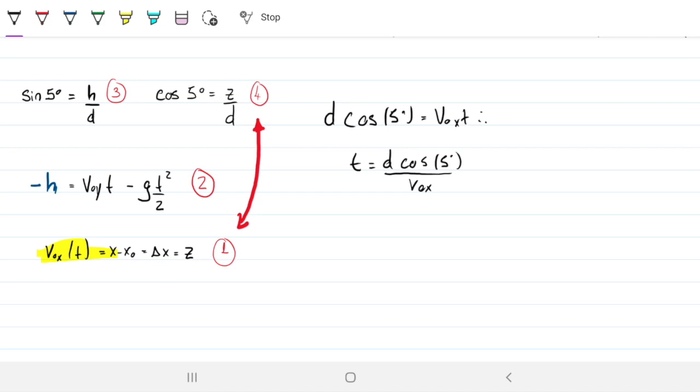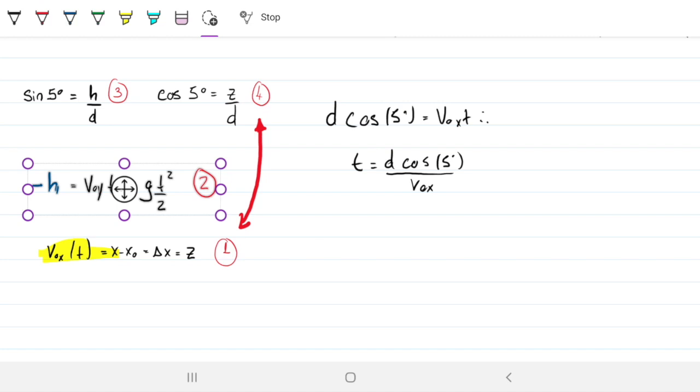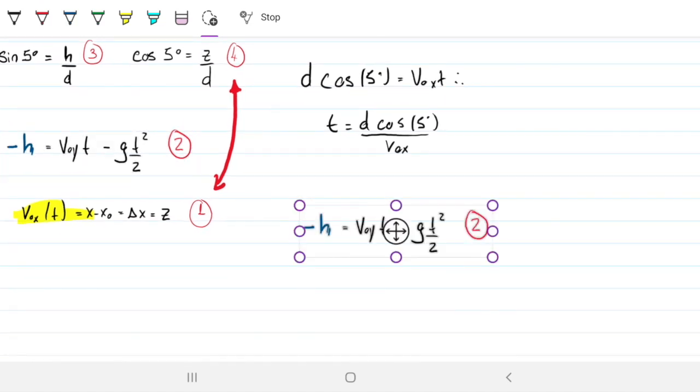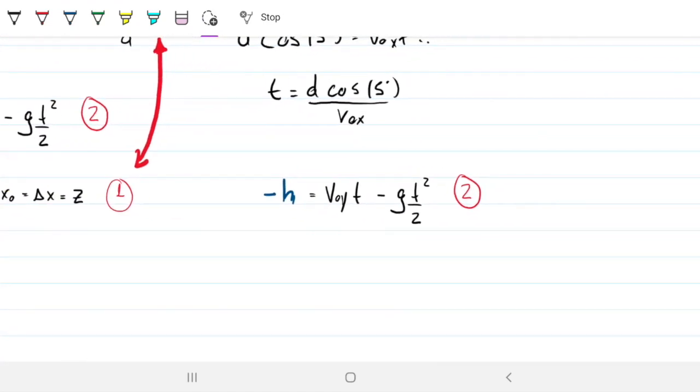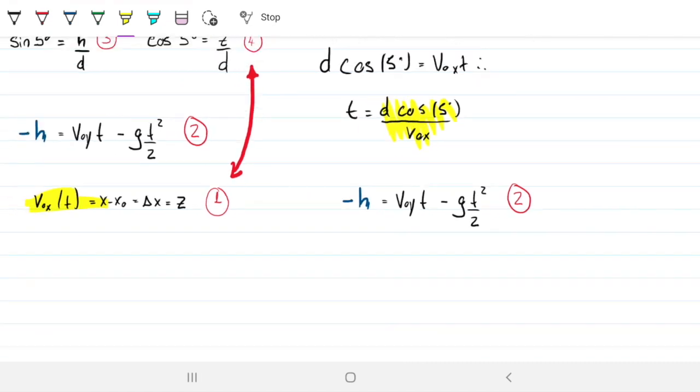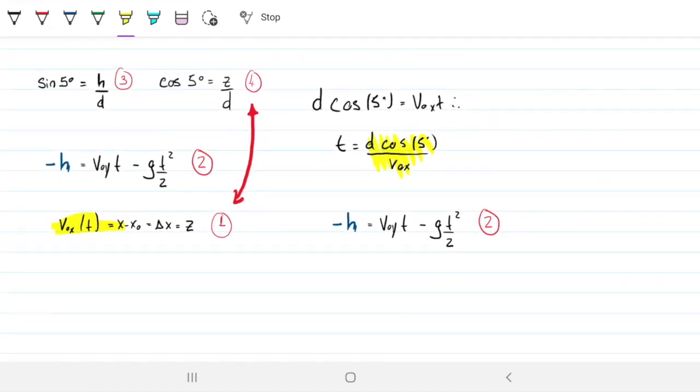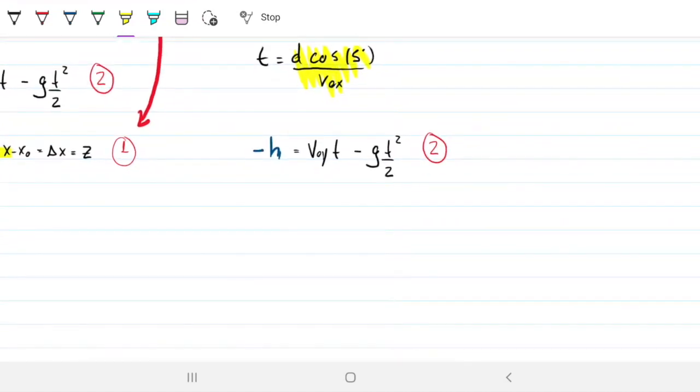And on equation two, which is going to be like the main equation that I'll be using for these things, I'm going to be subbing in everything else. This is going to be my main equation. So where I have T, I'll be subbing in this. This is going to give me negative H equals VOY D cosine of five divided by VOX minus G over two, D cosine of five divided by VOX squared.